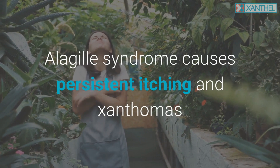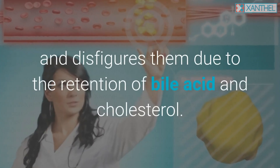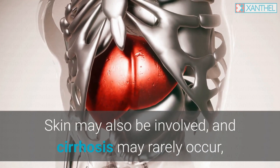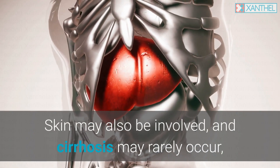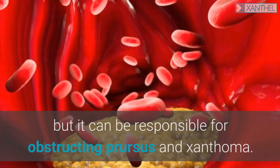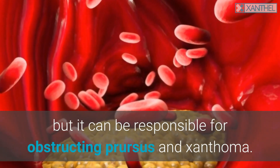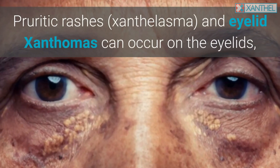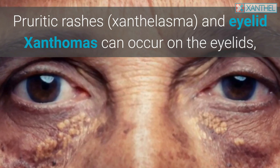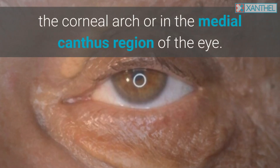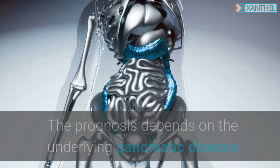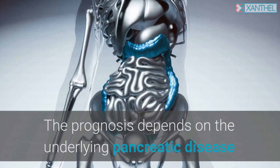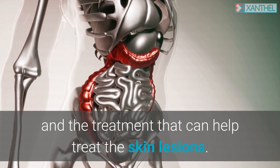Alagille syndrome causes persistent itching in xanthomas and disfigures them due to the retention of bile acid and cholesterol. Skin may also be involved, and cirrhosis may rarely occur, but it can be responsible for obstructing pruritus and xanthoma. Pruritic rashes, xanthalasma, and eyelid xanthomas can occur on the eyelids, the corneal arch, or in the medial canthus region of the eye. The prognosis depends on the underlying pancreatic disease and the treatment that can help treat the skin lesions.